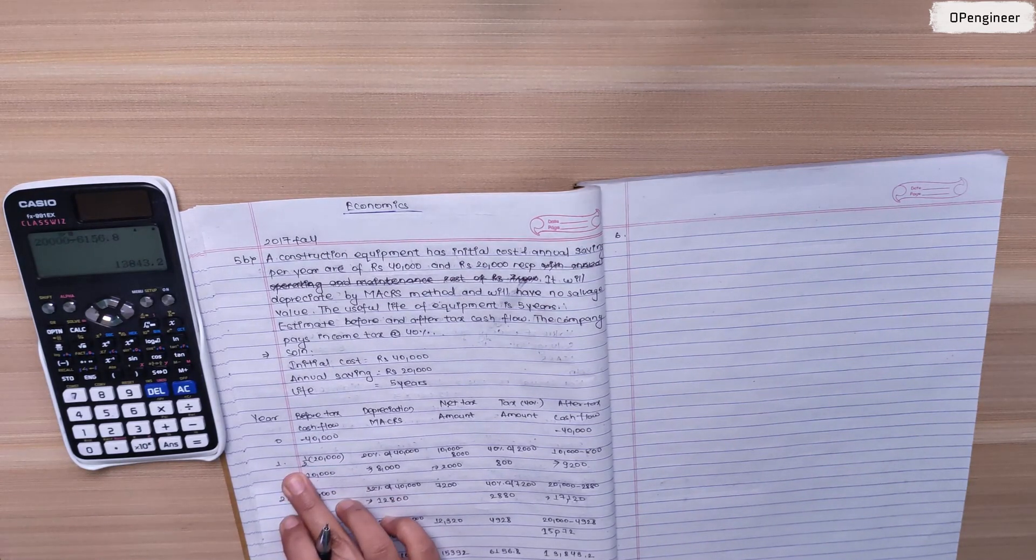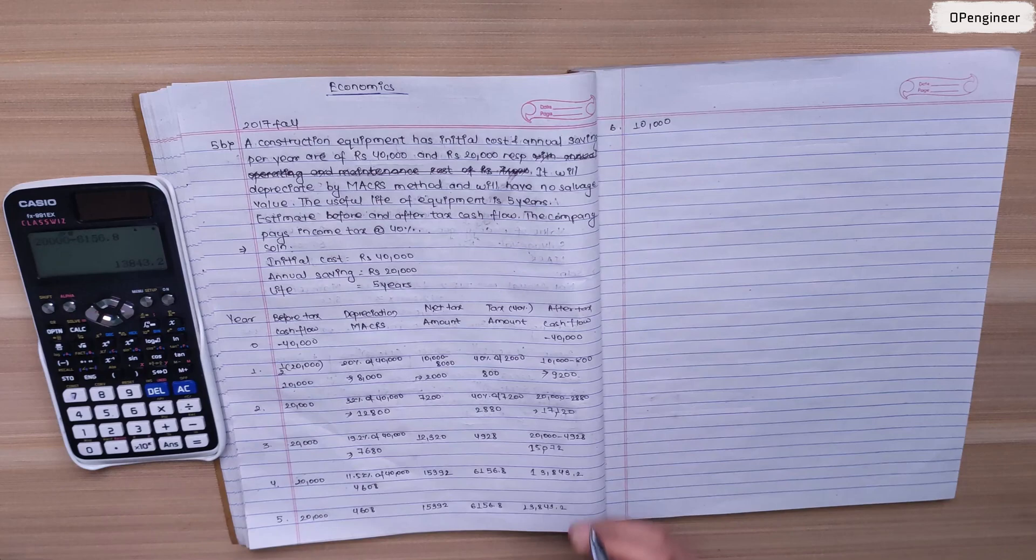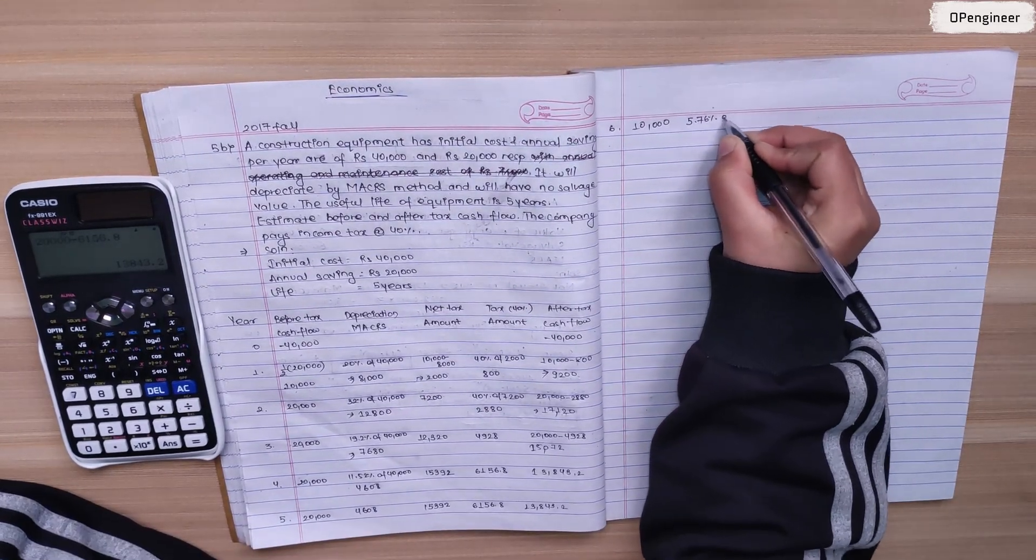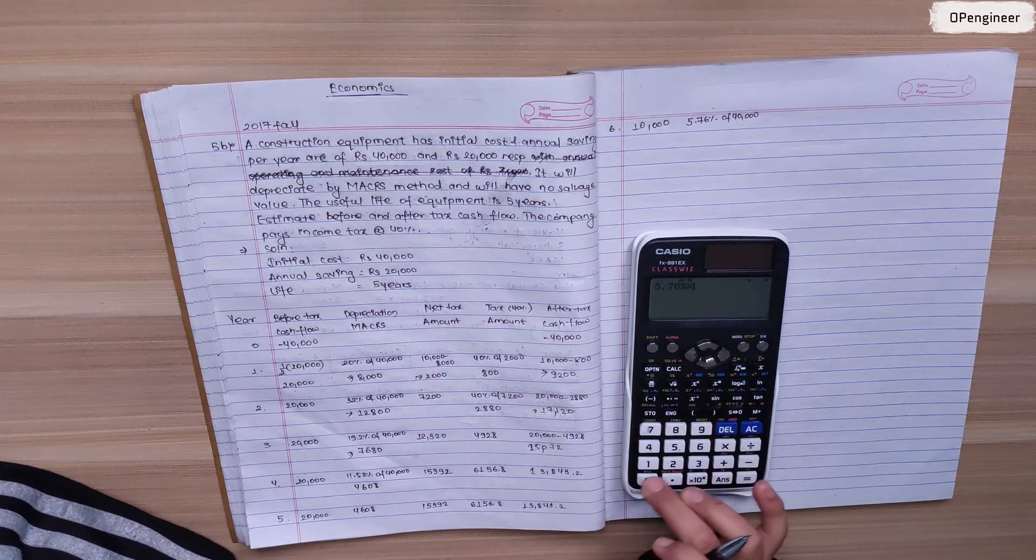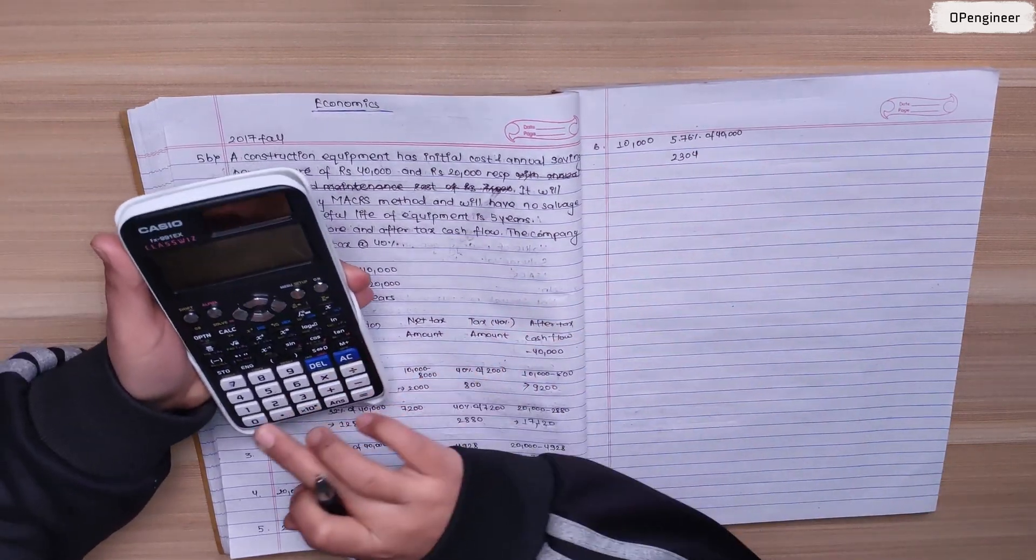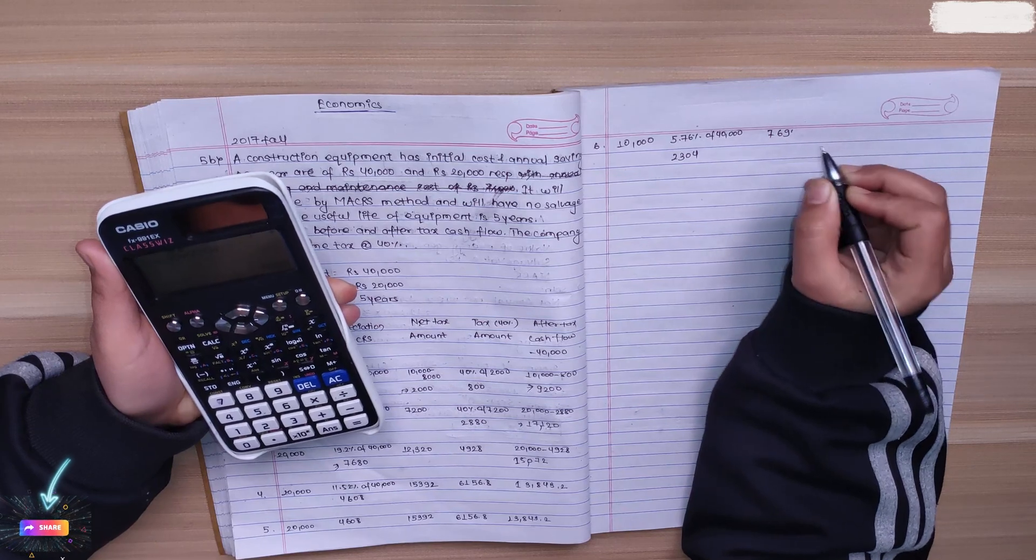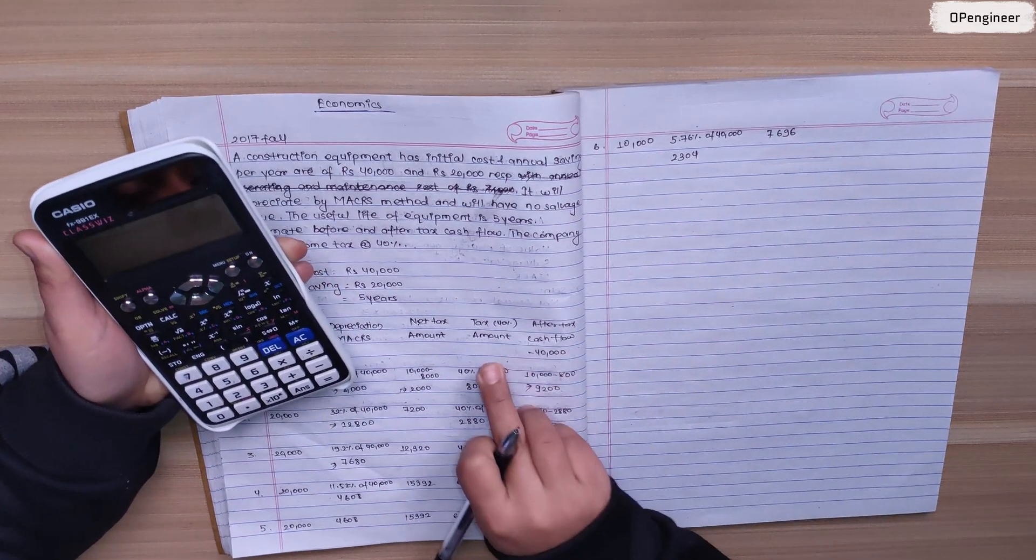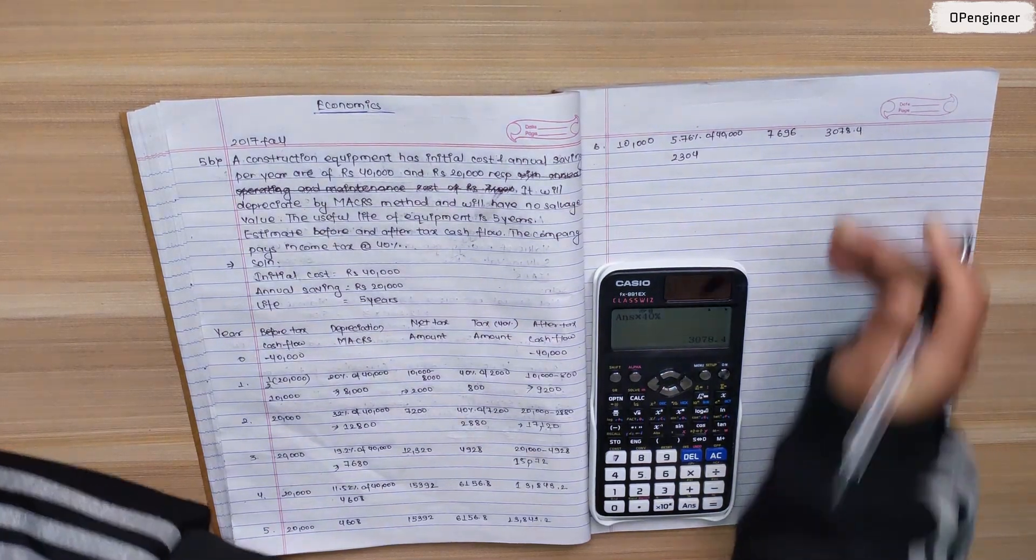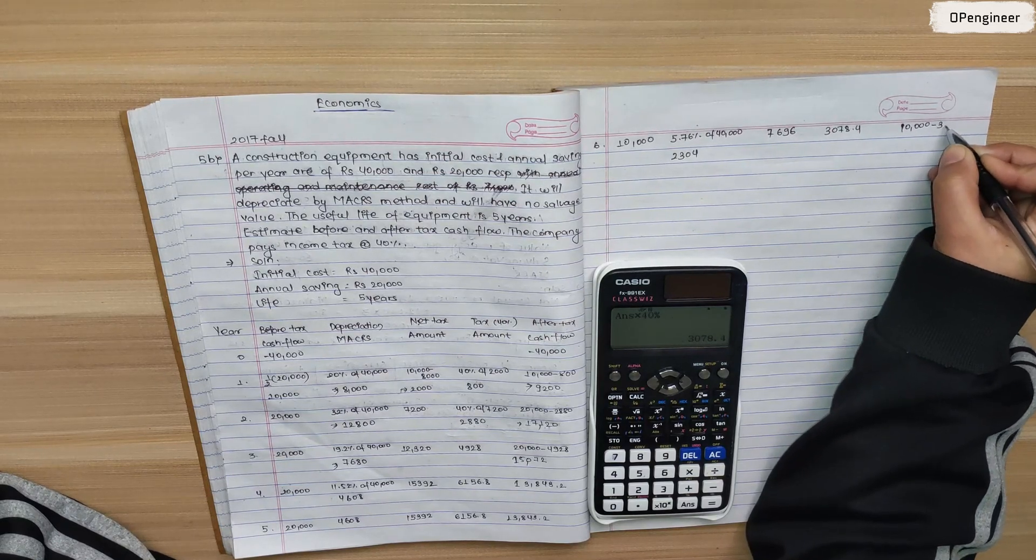In the sixth year, annual savings for the first half year is 10,000. Depreciation is 5.76% of 40,000, which is 2,304. Net taxable is 10,000 minus 2,304 equals 7,696. Tax is 40% of 7,696, which is 3,078. After tax cash flow is 10,000 minus 3,078 equals 6,922.